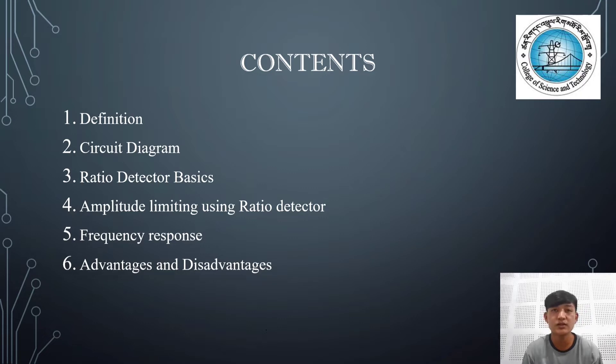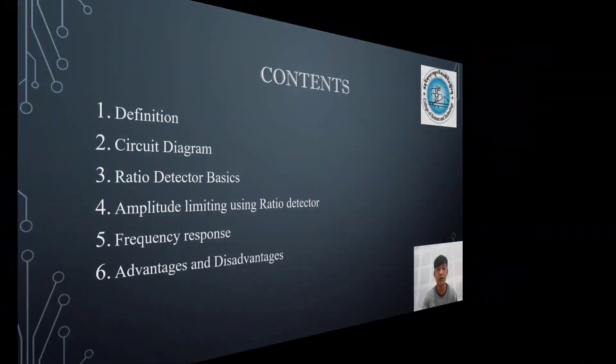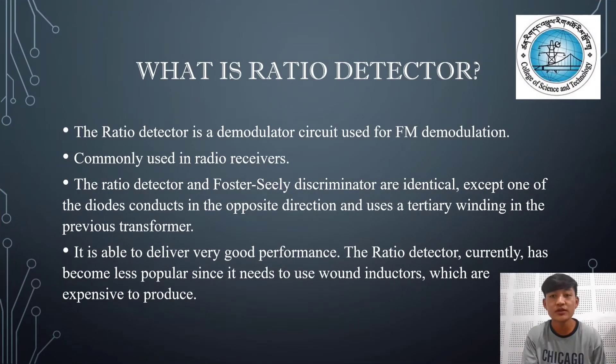What is a ratio detector? The ratio detector is a demodulator circuit used for FM demodulation. It is commonly used in radio receivers. The ratio detector and Foster-Seeley discriminator are identical except one of the diodes conducts in the opposite direction and uses a tertiary winding in the previous transformer.